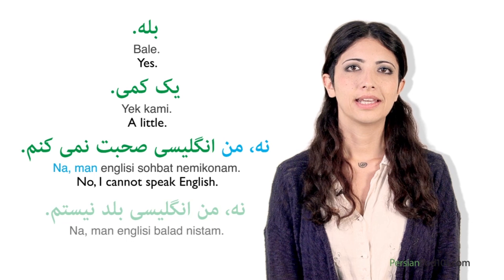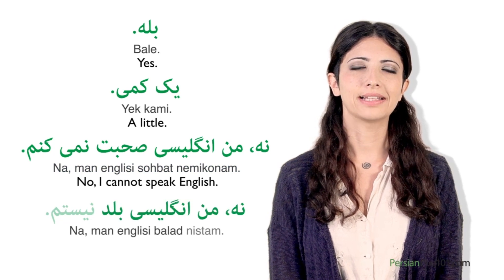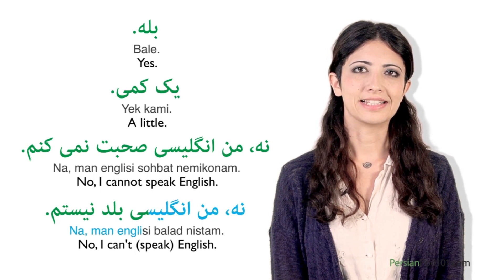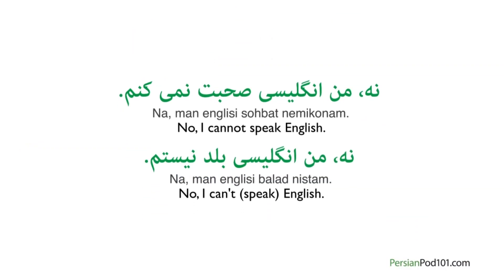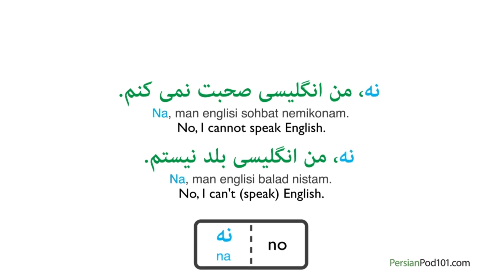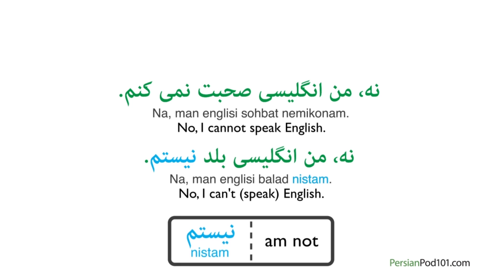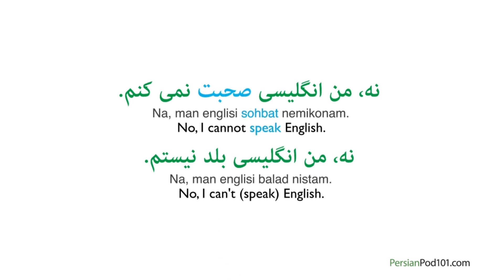Or: 'Na, man ingilisi balad nistam' — no, I can't speak English. Since this is a negative reply to a yes or no question, we say 'na' meaning no at the beginning. We also said 'ne mi konam' meaning don't after the verb 'sohbat' meaning talk or speak. Or 'nistam' meaning am not after the verb 'balad' meaning can. So 'sohbat ne mi konam' means I don't speak, and 'sohbat mi konid' means you speak.